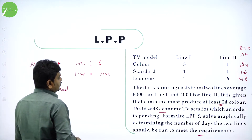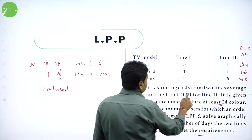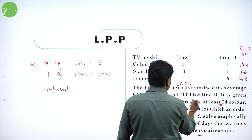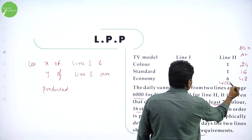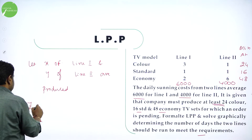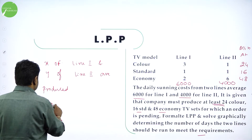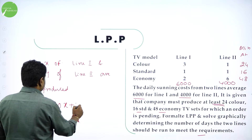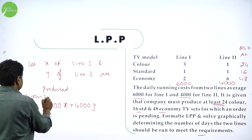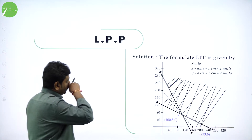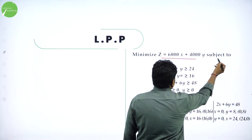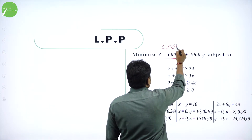The daily costs for the two lines are given: cost for Line 1 is 6,000 and cost for Line 2 is 4,000. We should always minimize the total cost. So the objective function — Z is the cost function — is Z = 6,000X + 4,000Y, and we need to minimize it. This is the objective function to solve the LPP.